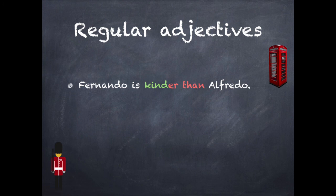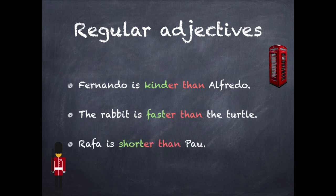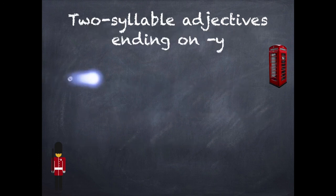Fernando is kinder than Alfredo. The rabbit is faster than the turtle, and Rafa is shorter than Pau.